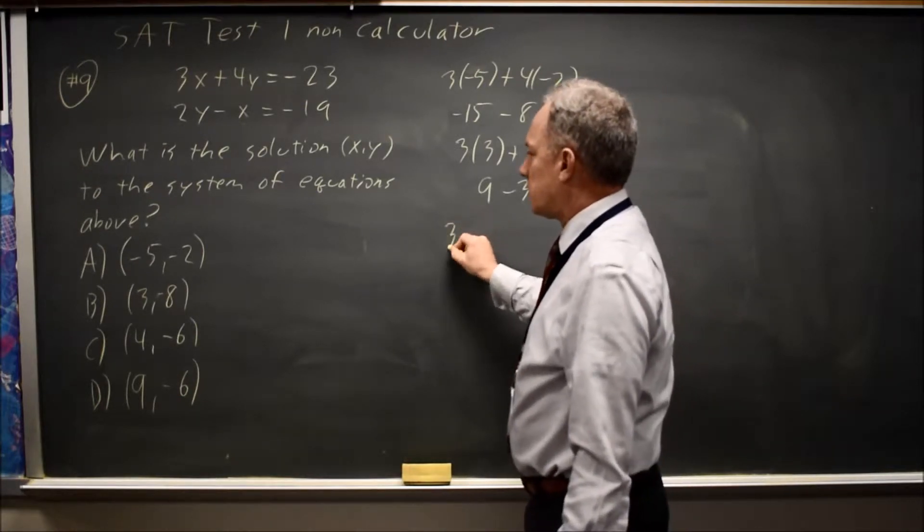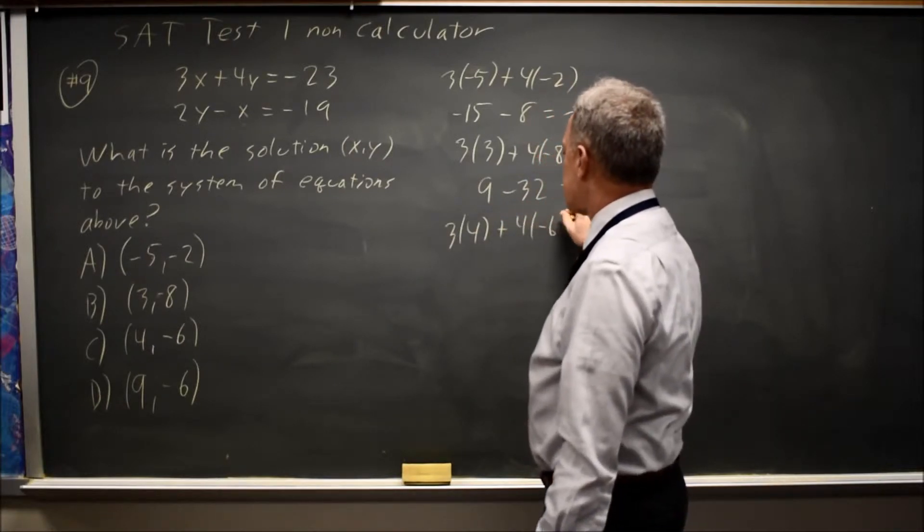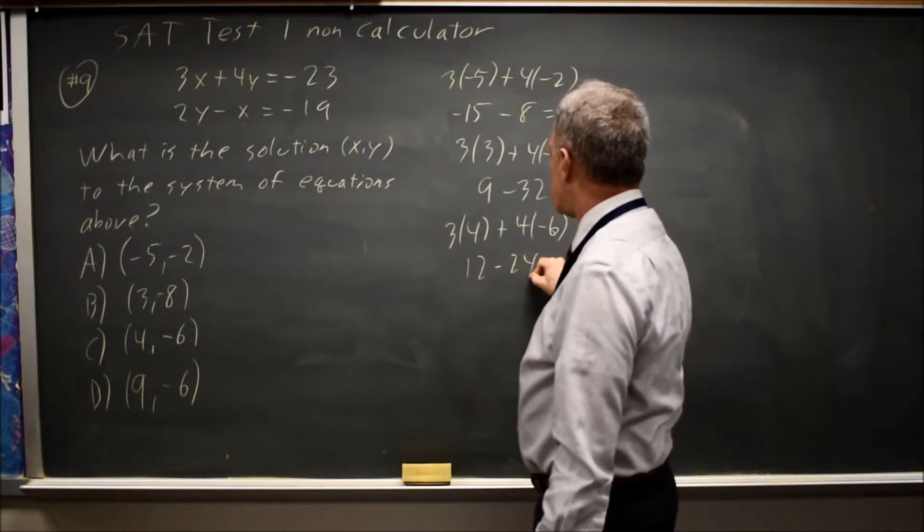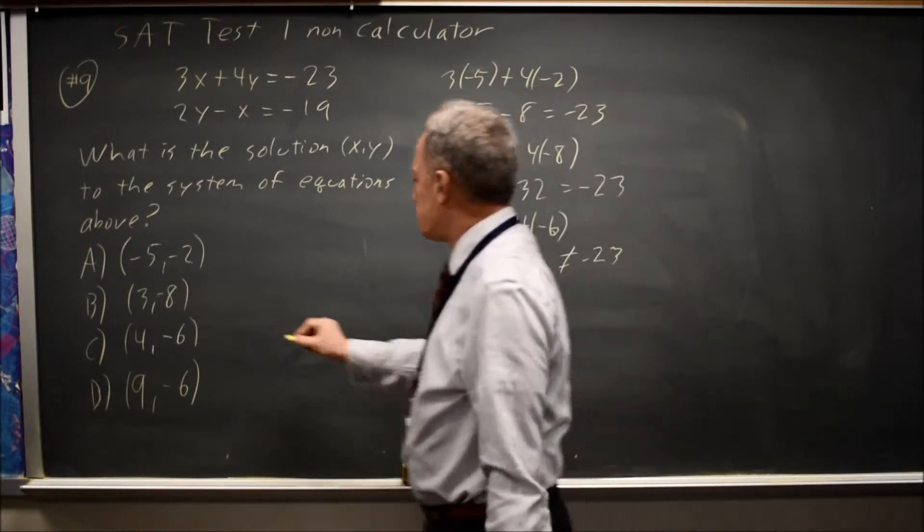How about the third one? 3 times 4 plus 4 times negative 6, that's 12 minus 24, which is not negative 23. So choice C is wrong.